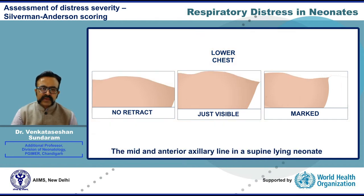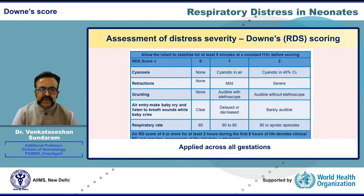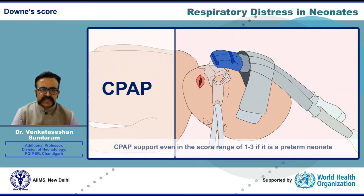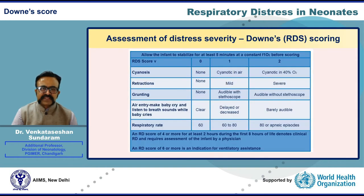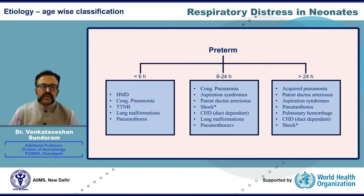Lower chest assessment looks for retractions at the mid and anterior axillary line in a supine neonate. The Downy score differs from Silverman in that it can be applied across all gestations. Even though conventionally the score guides severity and management, many now prefer to start early CPAP support even for a score range of 1 to 3 in preterm newborns if atelectasis is the suspected underlying pathology. Both scores still play an important role in understanding illness severity.